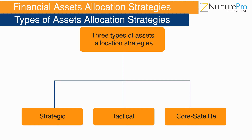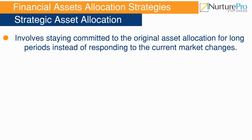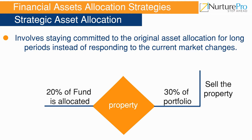In the strategic asset allocation strategy, assets are spread across a variety of asset classes on the basis of their past risk-return trend. For example, if an investor has allocated 20% to property and that sector performs better so it becomes 30% of the portfolio, then as per the strategic asset allocation strategy, the investor should sell the property and use the profits to rebalance the portfolio by again allocating 20% to property.